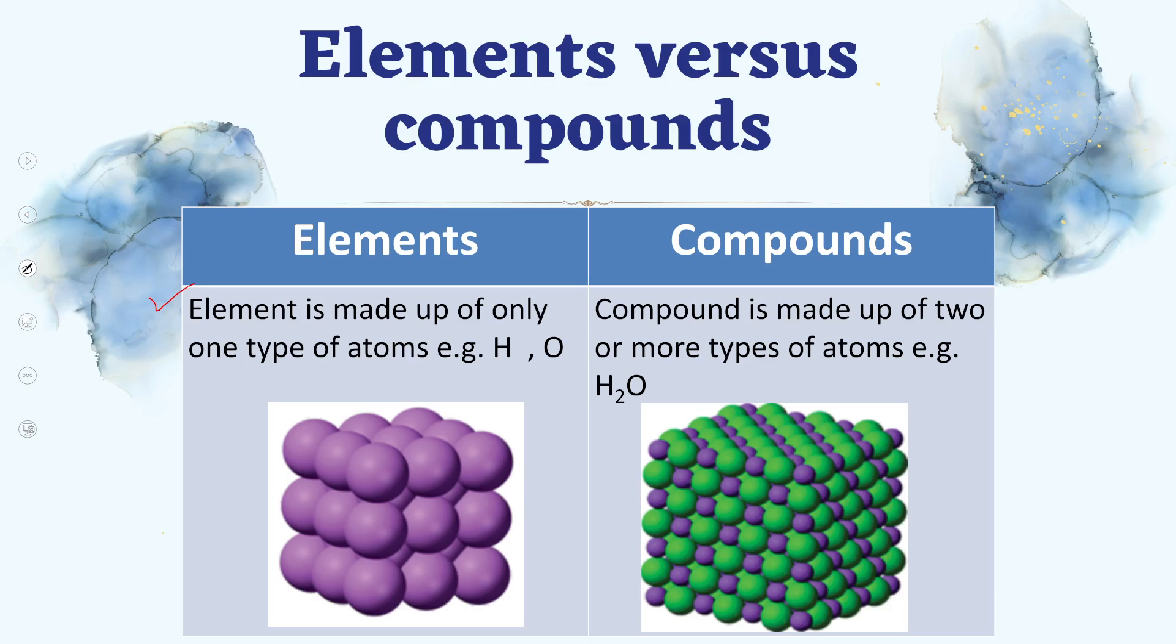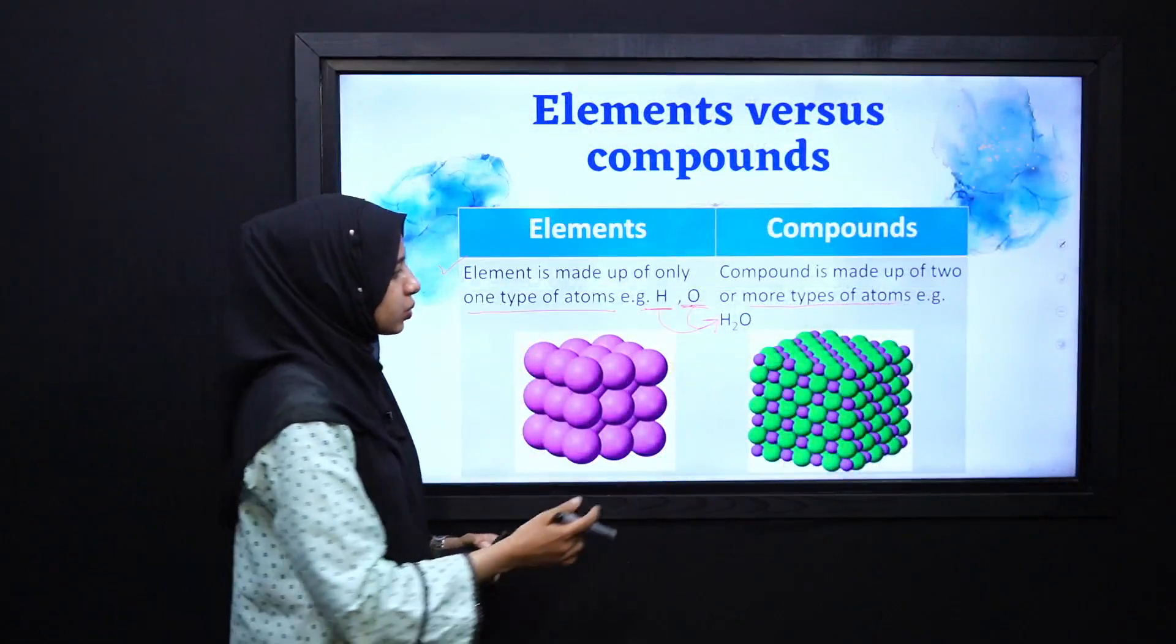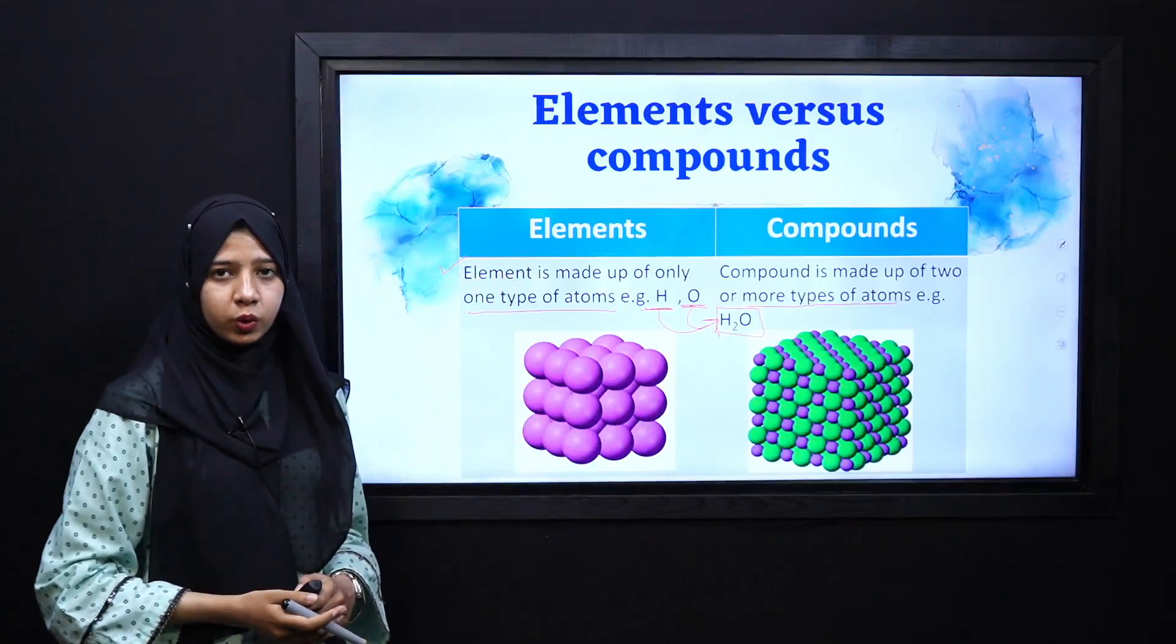elements are made up of only one type of atom. For example, hydrogen and oxygen combines both elements, combines and gives rise to a new substance, a new compound that is water.